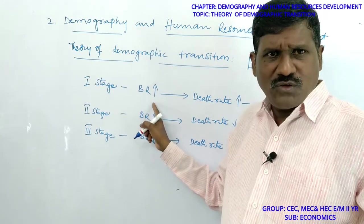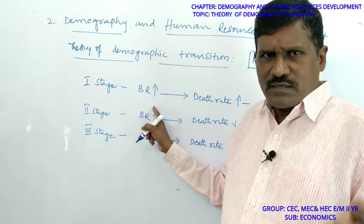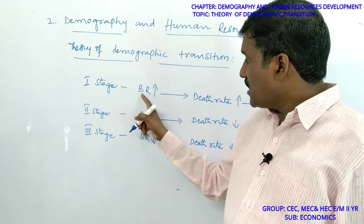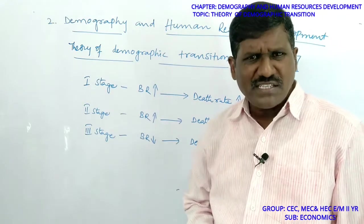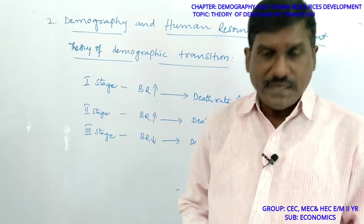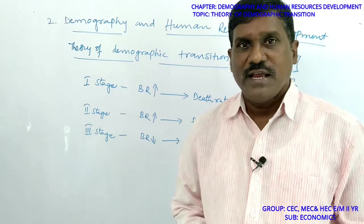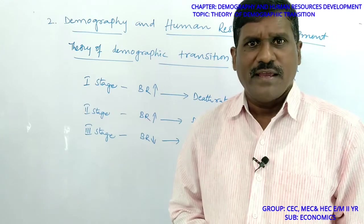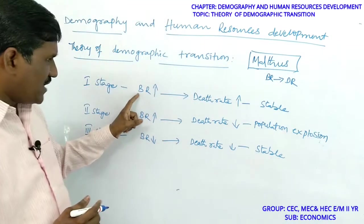In olden days the number of children in a single family was very large. High birth rate existed because most people were waiting for a male baby, most people were illiterate, and they had no knowledge of how many children to have or awareness about family planning.